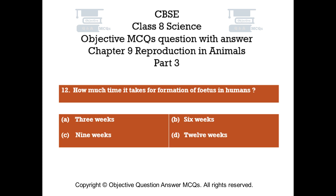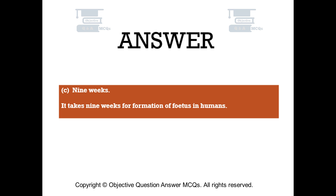Question number 12. How much time does it take for the formation of a foetus in humans? Option A: Three weeks. Option B: Six weeks. Option C: Nine weeks. Option D: Twelve weeks. The right answer is option C — Nine weeks. It takes nine weeks for the formation of a foetus in humans.